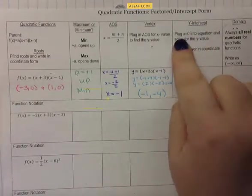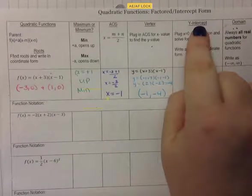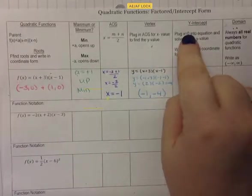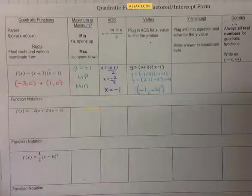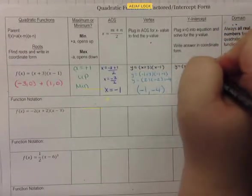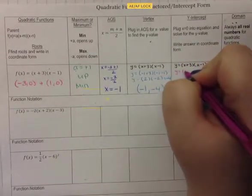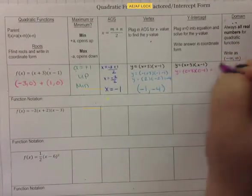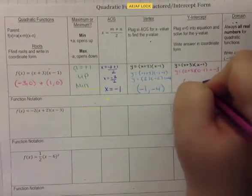Next we find the y-intercept, where the graph crosses the y-axis and x equals 0. We plug x = 0 into the equation: y = (0 + 3)(0 - 1) = 3 times negative 1 = negative 3. So our y-intercept is at (0, negative 3).